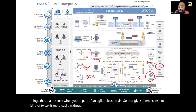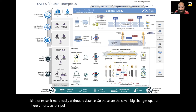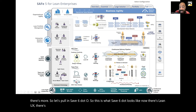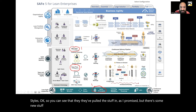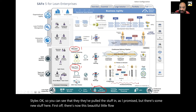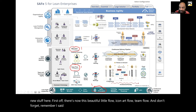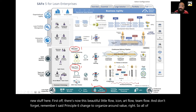So those are the seven big changes. Let's pull in SAFe 6.0. This is what SAFe 6.0 looks like now — there's Lean UX, there's built-in quality hanging out next to the two styles. You can see they've pulled the stuff in as promised, but there's some new stuff here. First off, there's now this beautiful little flow icon — ART flow and team flow.